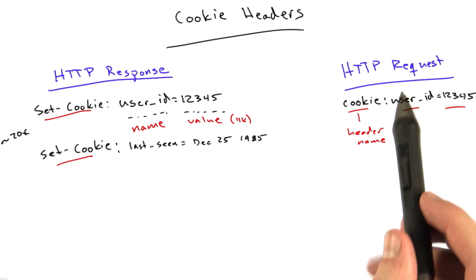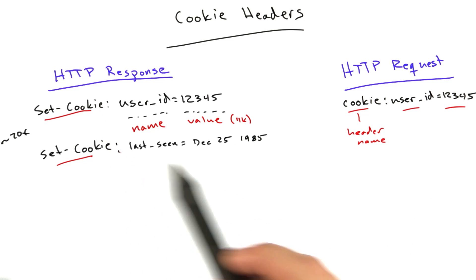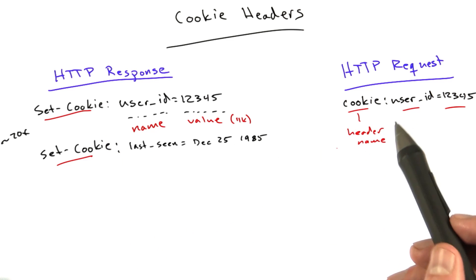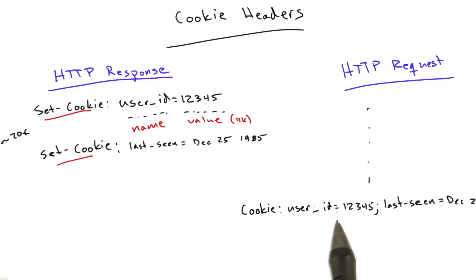If we were to make this request match what these two cookies were, when the browser sends multiple cookies, it looks something like this. User ID equals 1, 2, 3, 4, 5, semicolon, which separates each cookie from each other and then any other cookies. So the browser sends one cookie header with all of your cookies in it.